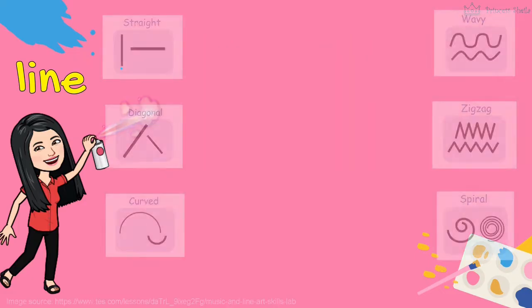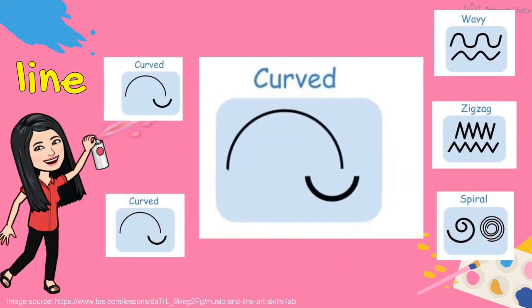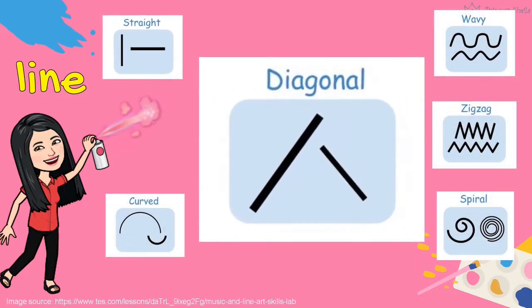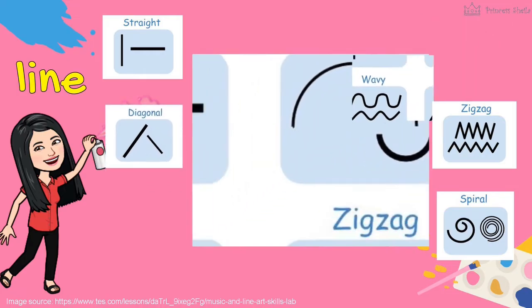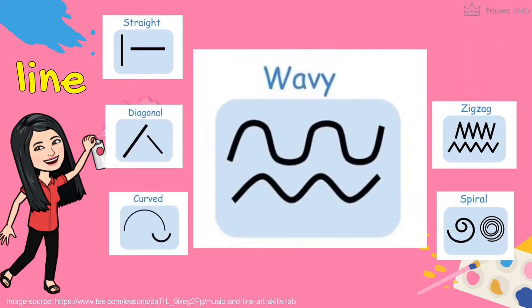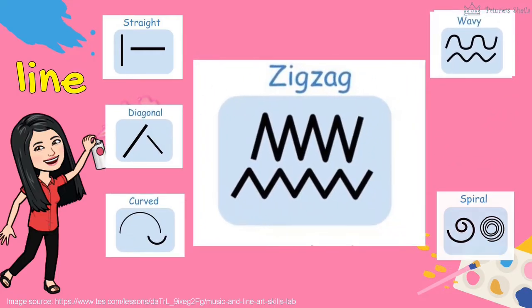There are different kinds of line, namely straight line, diagonal line, curved line, wavy line, zigzag line, and spiral.